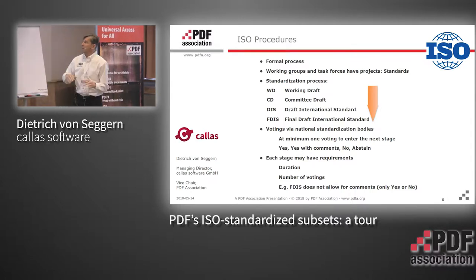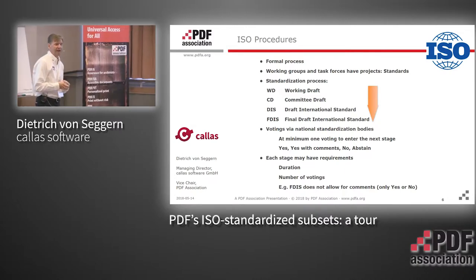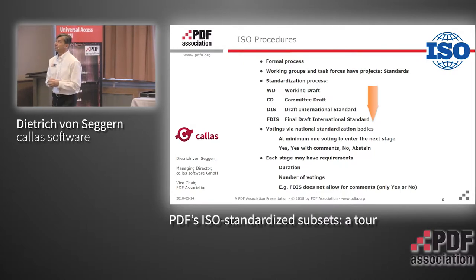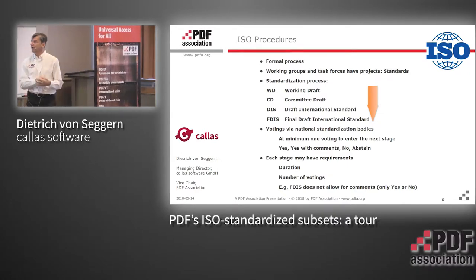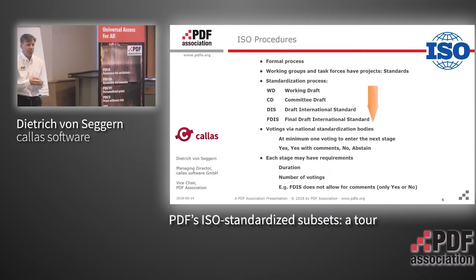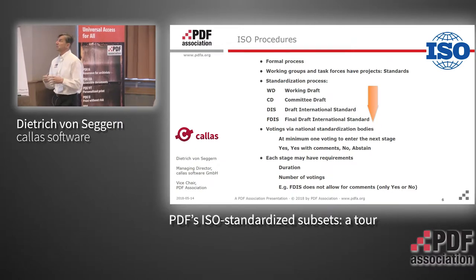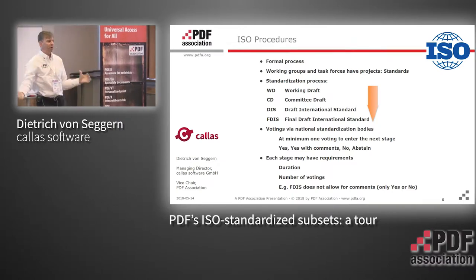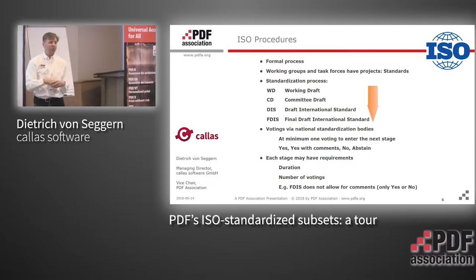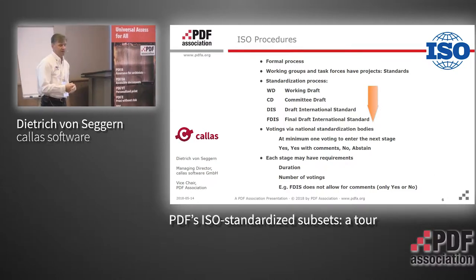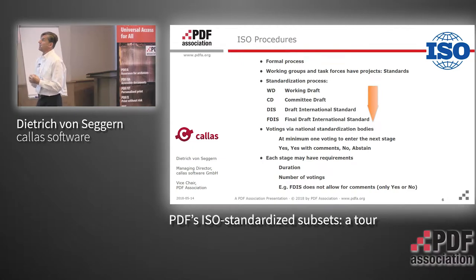I want to briefly introduce how ISO actually works to create standards — it's a very formal procedure. You have committees; I've already mentioned two: one for graphic arts and one for document processes, both working with and for PDF. These committees are divided into working groups, which are divided into task forces, and the task forces and working groups work on projects. A project is a standard — or a technical specification or similar — but in many cases it's a standard.